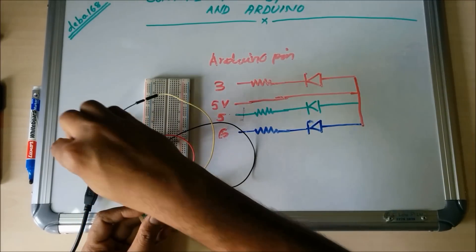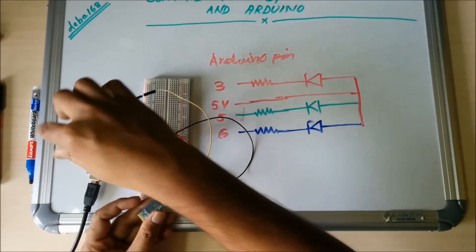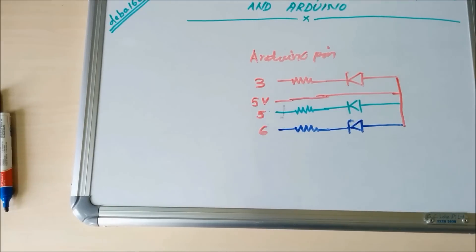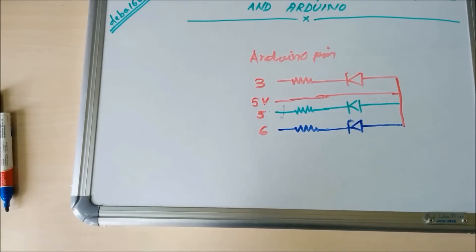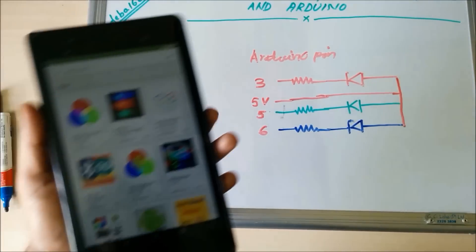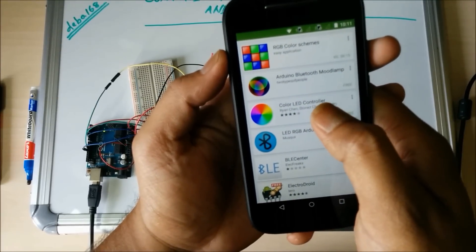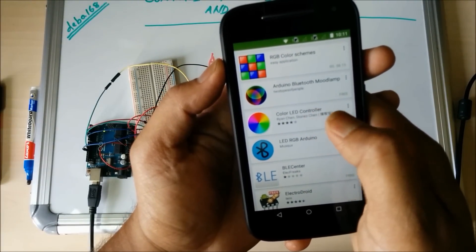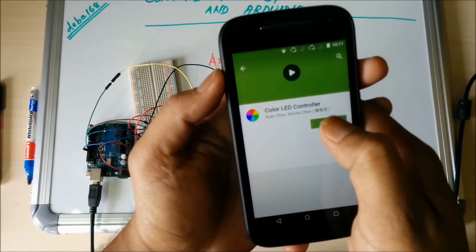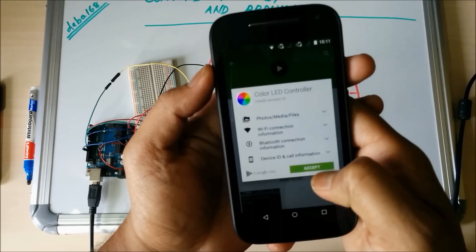Now you have to download the app from Play Store. This is the app I am going to use: Color LED Controller. Install, then accept.